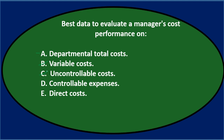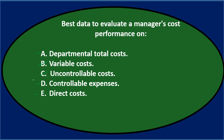D says controllable expenses, which is the same as costs — that seems more reasonable. E says direct costs, which might seem reasonable too. Narrowing it down to A, D, or E: total costs sounds reasonable until you consider that a manager may have total costs they don't control. We shouldn't hold people accountable for what they don't have control over.